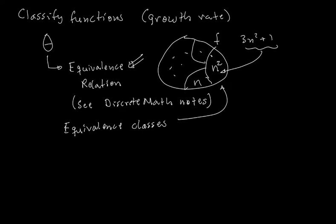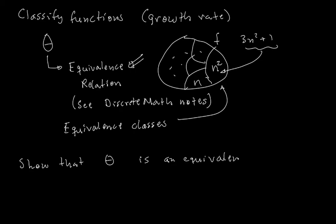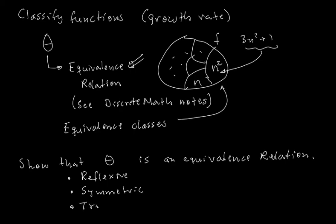The equivalence classes are going to be the little subsets — the partitions — into which the set of all functions is divided. In order to do this, I need to show that theta, seen as a relation, is an equivalence relation. To show that something is an equivalence relation, we need to show three properties: it is reflexive, symmetric, and transitive.